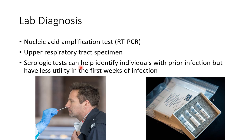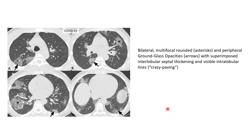Serologic tests can help identify individuals with prior infection, but they have less utility in the first weeks of infection. Now let us discuss CT scan findings in COVID-19. There will be bilateral multifocal rounded and peripheral ground glass opacities. There will also be interlobular septal thickening and visible intralobular lines giving a crazy paving appearance.